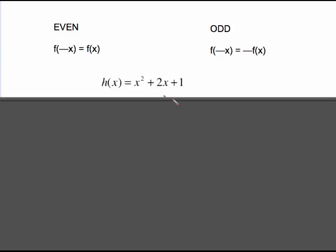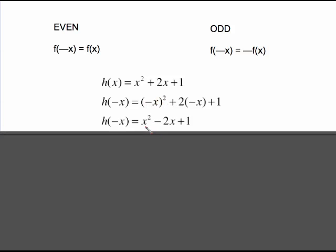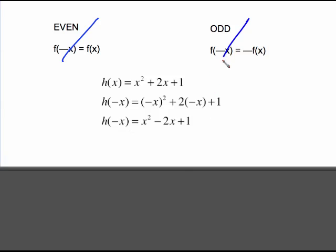For the next equation, we plug in negative x for each x. Negative x raised to an even power comes out to be a positive x squared. 2 times negative x is negative 2x, and plus 1 just hangs around. Comparing these: are they exactly the same? No, so it's not even. Is this the exact opposite of that — if I change all those signs will I get the new one? No. So it's neither even nor odd — we say neither.